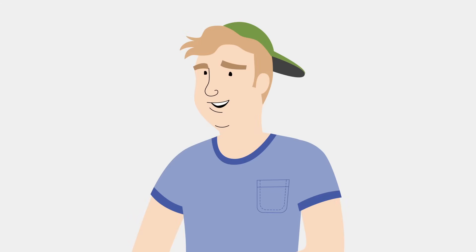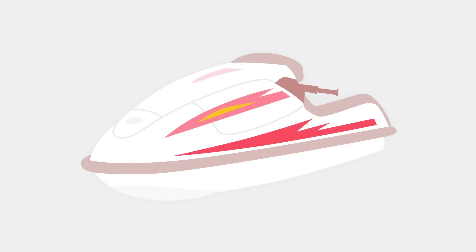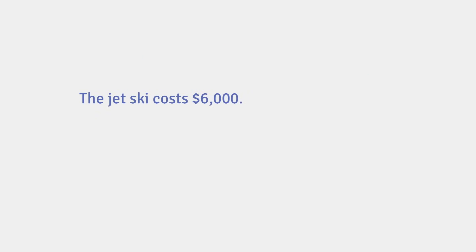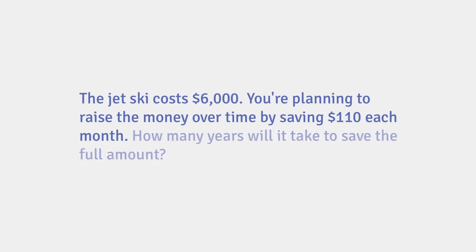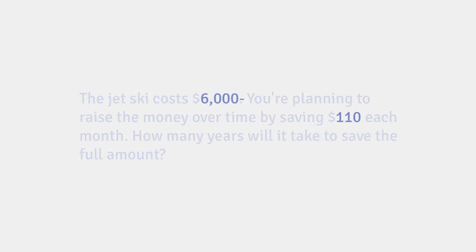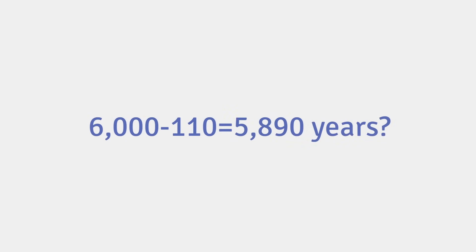Say you're this guy, and you've been thinking a lot about your finances lately. You want to save up enough money to buy a brand new, totally awesome jet ski. Here's the problem: the jet ski costs $6,000. You're planning to raise the money over time by saving $110 each month. How many years will it take to save the full amount? Even at a glance, you can tell this problem is a little different from the last example — it's going to take more than a simple subtraction formula to figure it out.